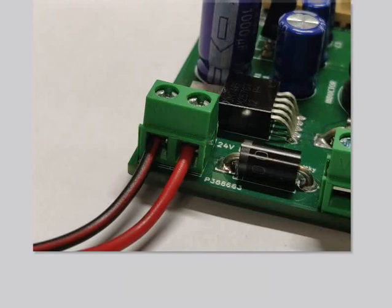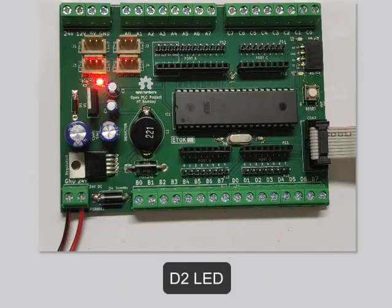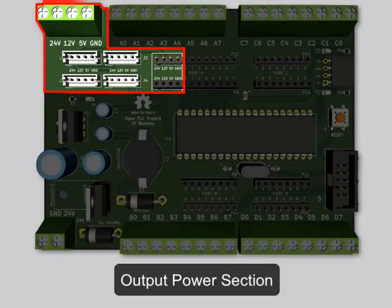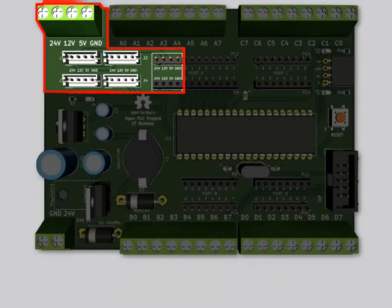After making all the connections properly, turn on the power supply. Make sure that the D2 LED is glowing on your board, which indicates that the board is powered up. We will now take a look at the output power section. 24V, 12V, 5V and ground outputs are provided for connections with external modules.